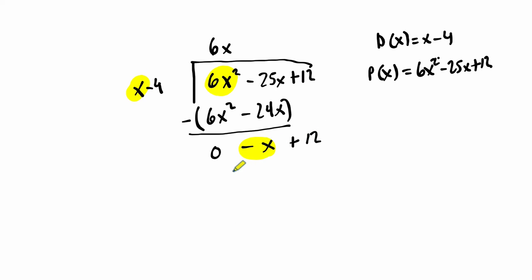And again, we divide these leading terms. Negative x by x is negative 1. And then negative 1 times x minus 4 is negative x plus 4. We subtract to find if there's a remainder. Negative x minus itself is 0. 12 minus 4 is 8. So there is a remainder.